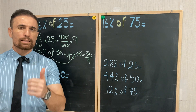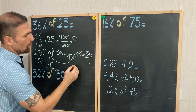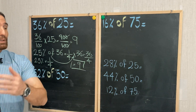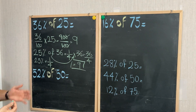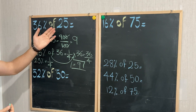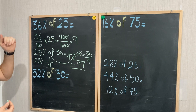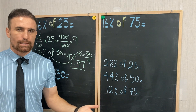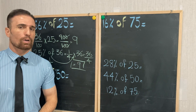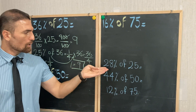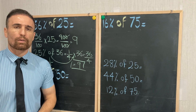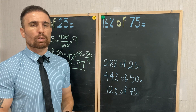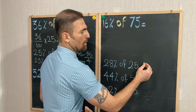Absolutely less than one second. 36 over 4 equals 9, and this is the correct answer. So next time when you see this type of question — like 36 percent of 25 — it is enough to answer: what is 36 divided by 4? Less than one second. Now it's your turn: 28 percent of 25. Just do 28 divided by 4, which equals 7.